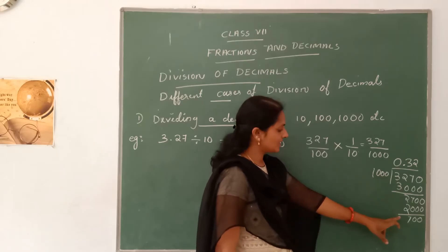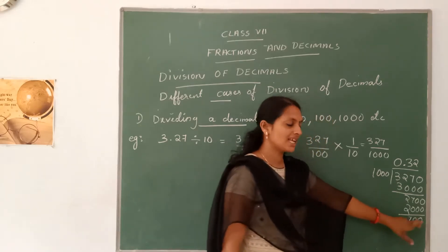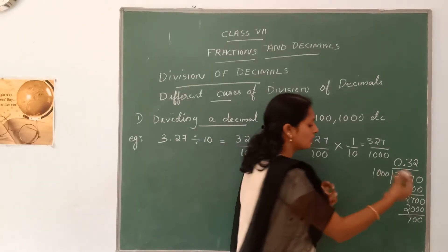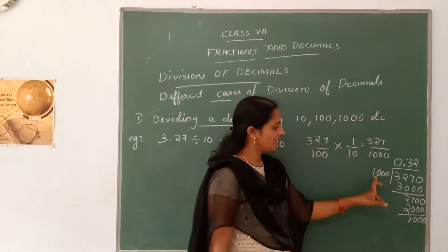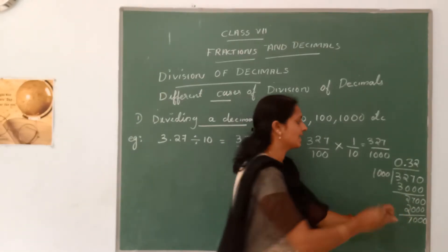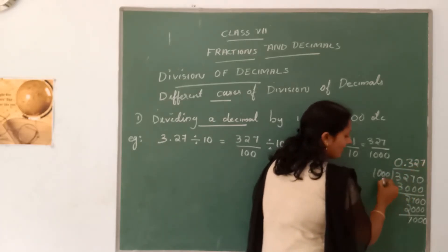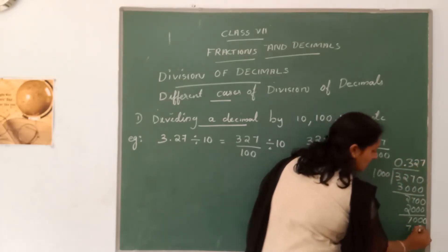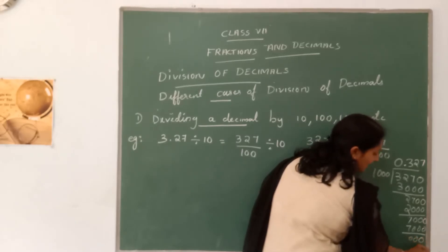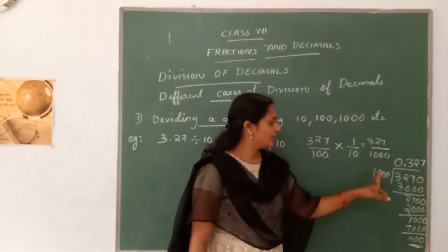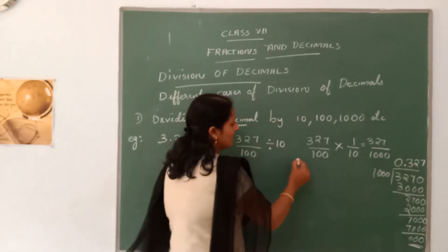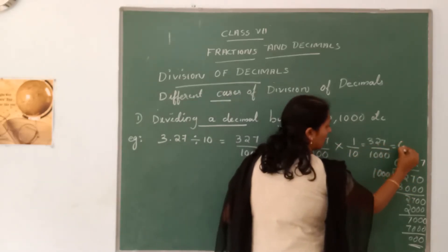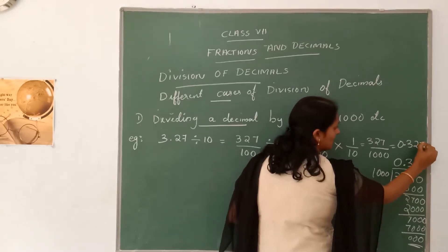Again the new dividend 700 is less than the divisor 1000, so put one 0 on the right side. How many times does 1000 go into 7000? That is 7. Then 7 times 1000 equals 7000. Subtracting, the remainder is 0. So the answer is 0.327.